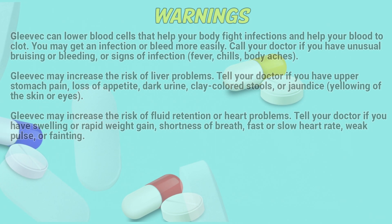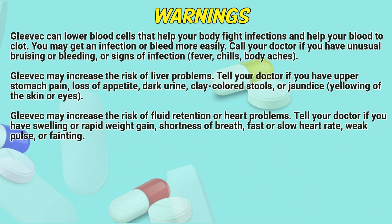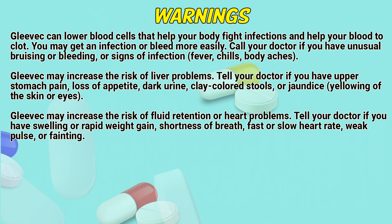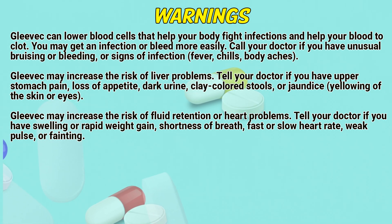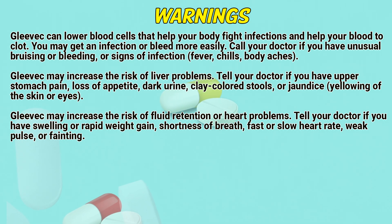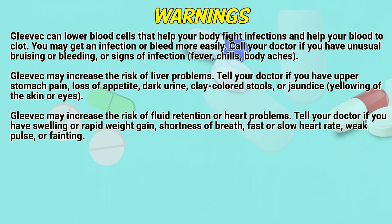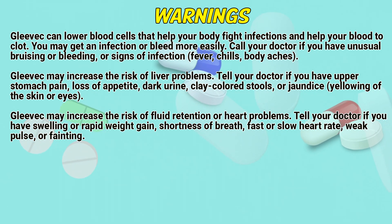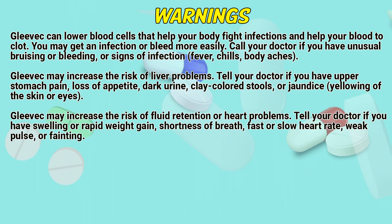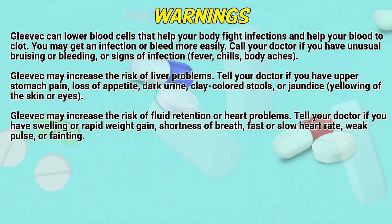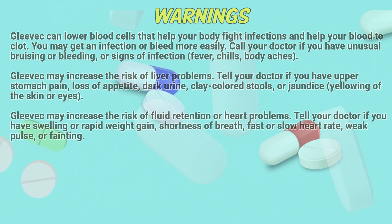Warnings: Glivik can lower blood cells that help your body fight infections and help your blood to clot. You may get an infection or bleed more easily. Call a doctor if you have unusual bruising or bleeding, or signs of infection such as fever, chills, or body aches. Glivik may increase the risk of liver problems — tell a doctor if you have upper stomach pain, loss of appetite, dark urine, clay-colored stools, or jaundice. Glivik may also increase the risk of fluid retention or heart problems — tell a doctor if you have swelling, rapid weight gain, shortness of breath, fast or slow heart rate, weak pulse, or fainting.